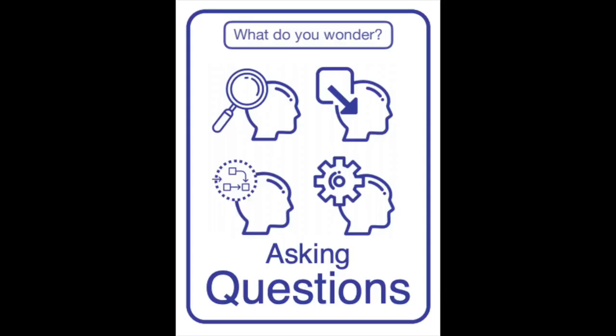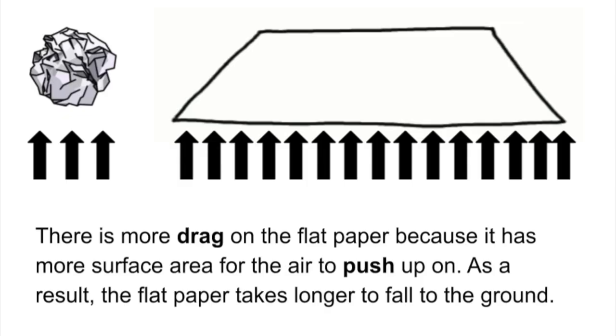A lot of you were wondering why the paper ball fell so much faster than the flat piece of paper, even though they had the same mass. And the answer has to do with, as some of you already figured out, shape.